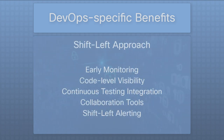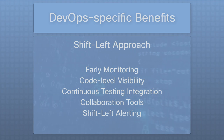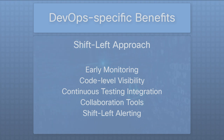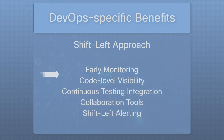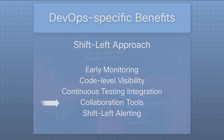AppDynamics offers several features related to the shift left approach. Shift left in the context of software development refers to moving processes such as testing and quality assurance earlier in the development lifecycle. Features of AppDynamics that align with the shift left approach include early monitoring, code level visibility, continuous testing integration, collaboration tools, and shift left alerting.